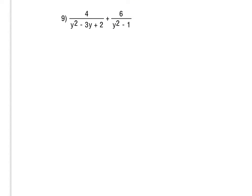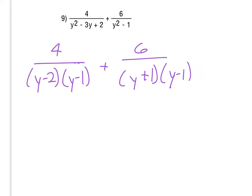With number 9, we've got some factoring to do with our denominators. Let's go ahead and start with the y squared minus 3y plus 2. Again, not meant to be the most difficult factoring problems. This is just y minus 2, y minus 1. And then we've got the 6 over y squared minus 1, so that's our difference of squares pattern.